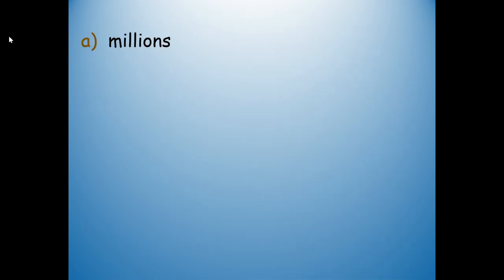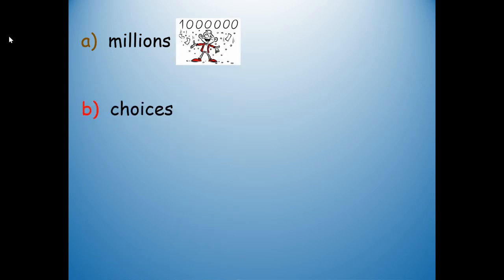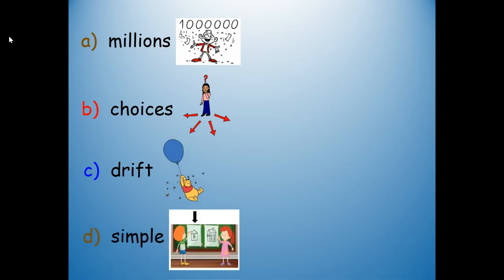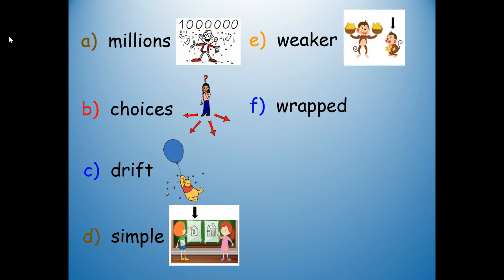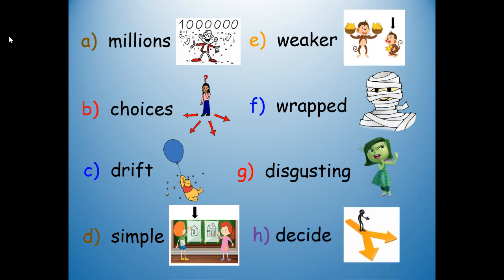We're going to review the eight vocabulary words. You do not need to write them — just read them and look at each picture. A: Millions. B: Choices. C: Drift. D: Simple. E: Weaker. F: Wrapped. G: Disgusting. H: Decide.